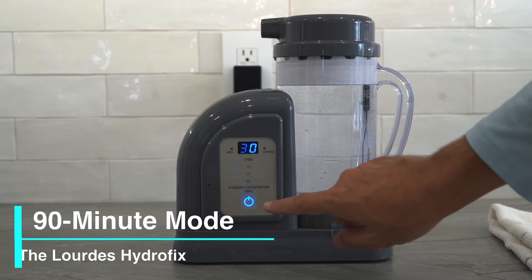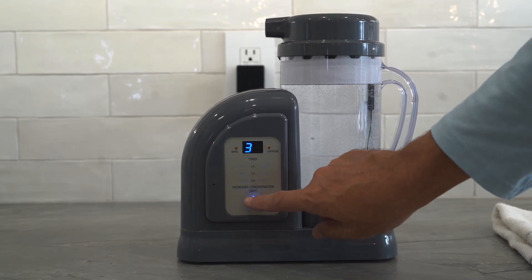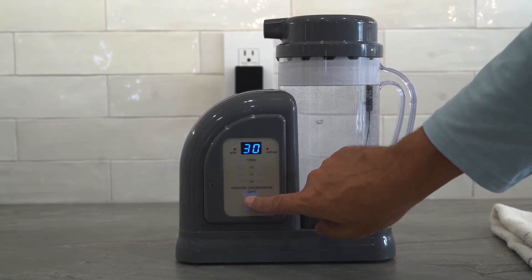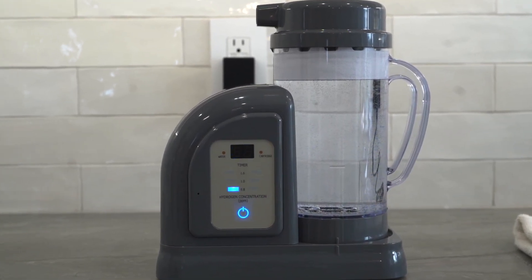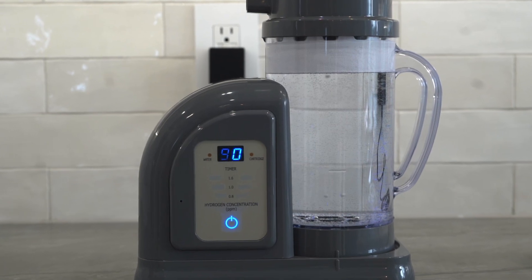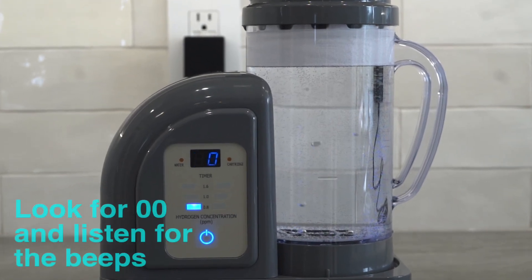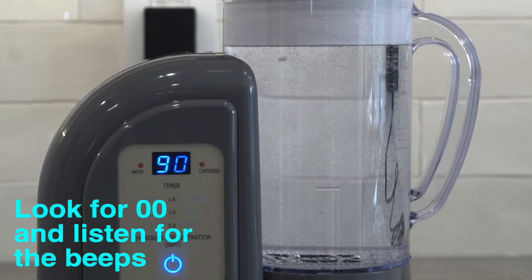To enter the 90-minute mode, press the power button twice. You will hear a beep, the timer will show 90, and the hydrogen concentration bar will blink to indicate the approximate hydrogen level during the production mode. The water will be fully saturated with hydrogen when the timer displays 00 and you hear the beeps.